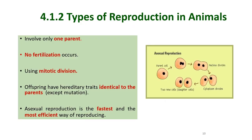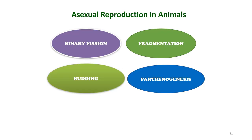Similar to plants, there are two modes of reproduction in animals: sexual reproduction and asexual reproduction. Asexual reproduction involves one parent, no fertilization, and mitotic division. Offspring are identical to the parent unless mutation occurs. It has the advantage of being the fastest and most efficient way of reproducing. There are four types of asexual reproduction in animals: binary fission, fragmentation, budding, and parthenogenesis.